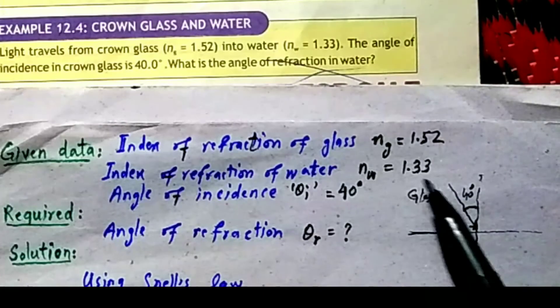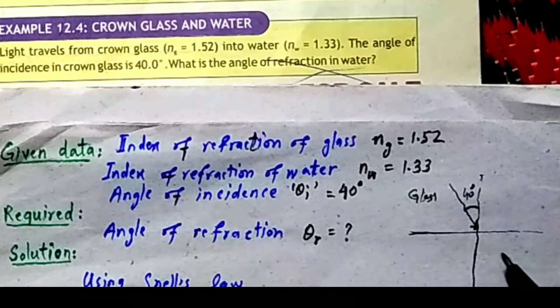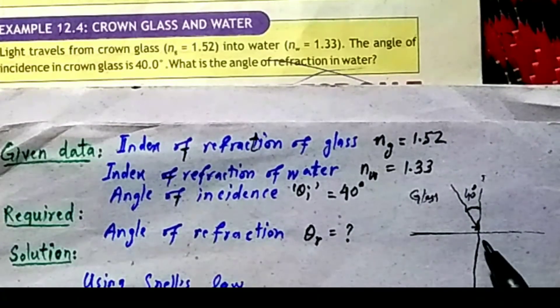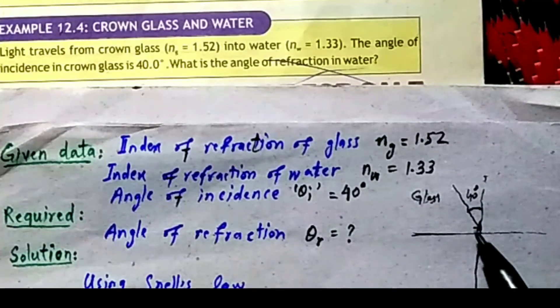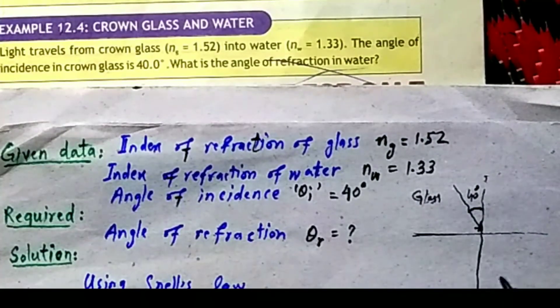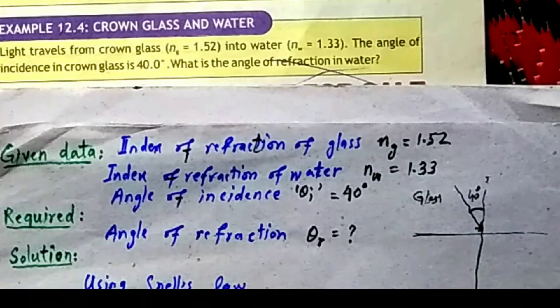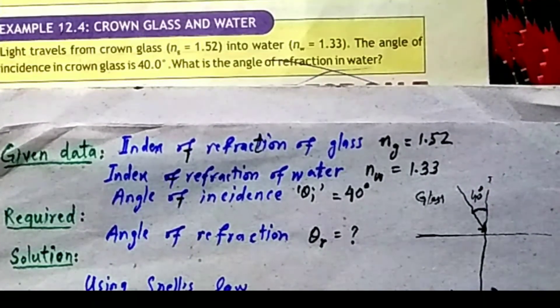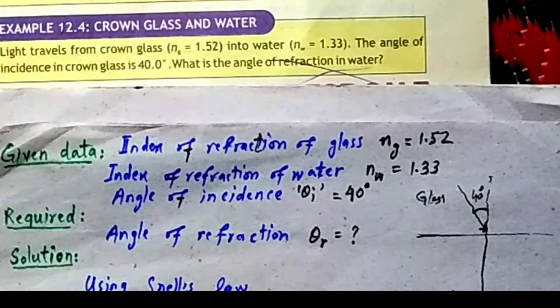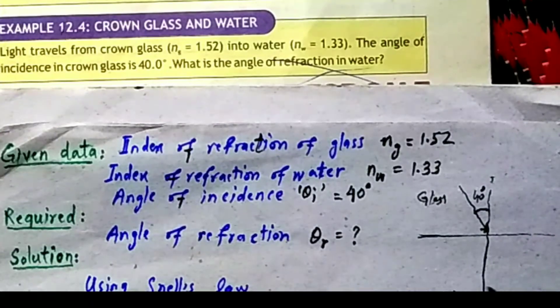Glass is optically denser, and water is less optically denser — it is the rarer medium in comparison.